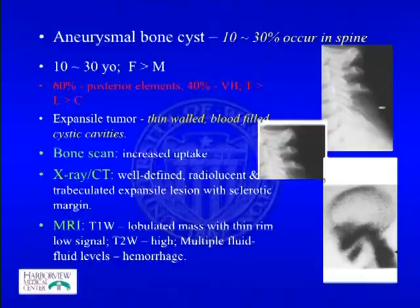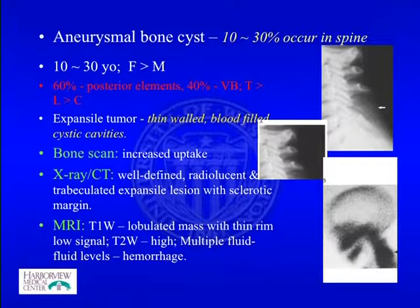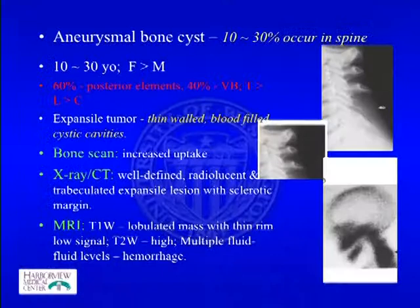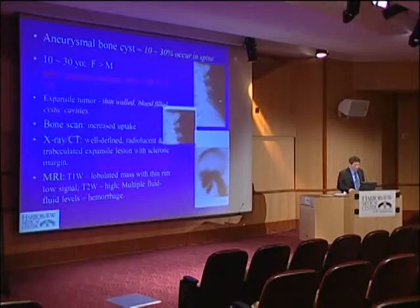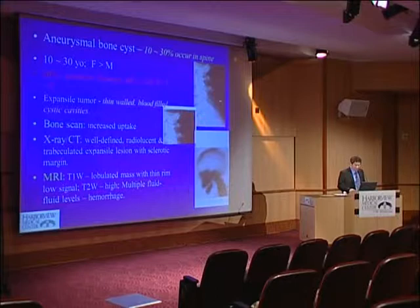Aneurysmal bone cyst has a 10 to 30% chance of occurring in the spine, normally in patients aged 10 to 30 with female predominance. About 60% occur at the posterior elements and 40% in the vertebral body, with the thoracic spine being the most likely location. It is an expansile tumor with thin walls and blood-filled cystic cavities. X-ray and CT show a well-defined radiolucent, trabeculated expansile lesion with a sclerotic margin.